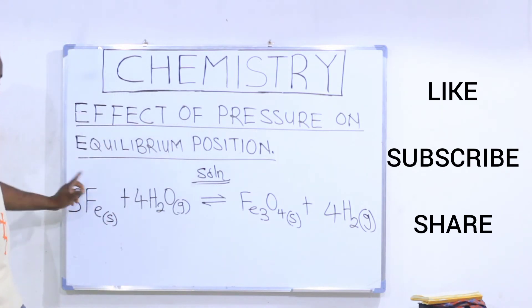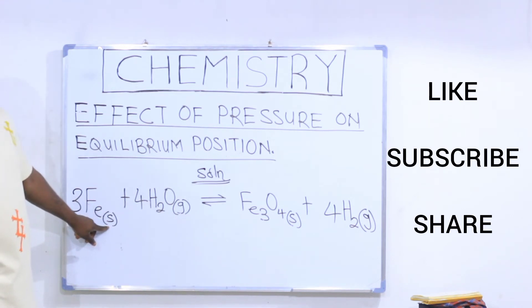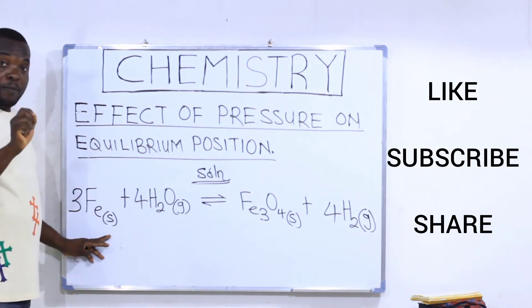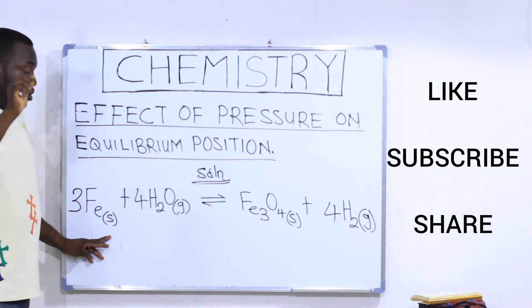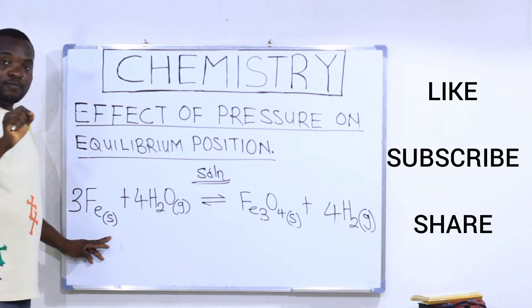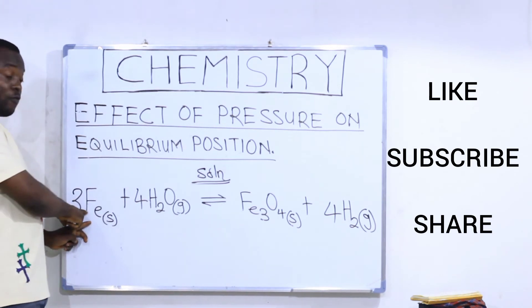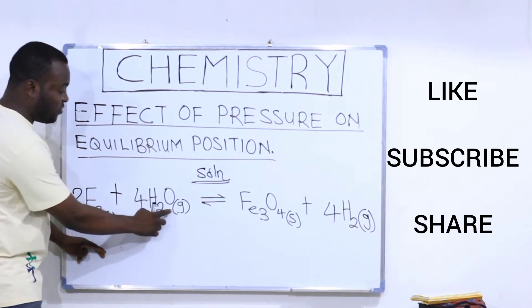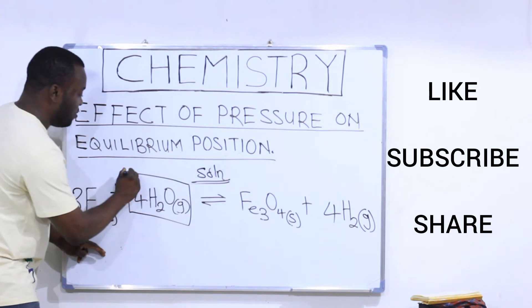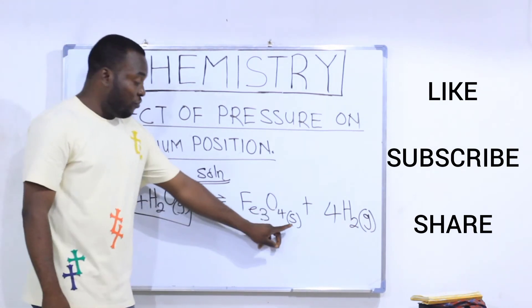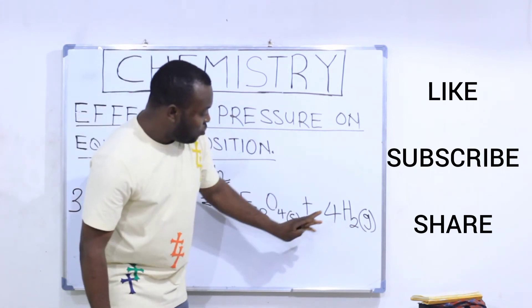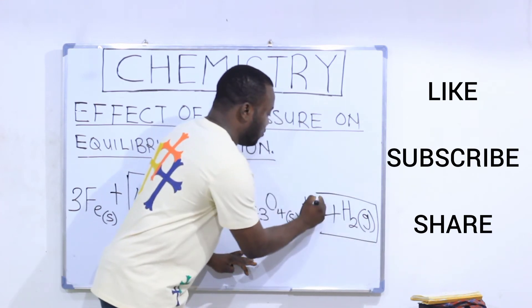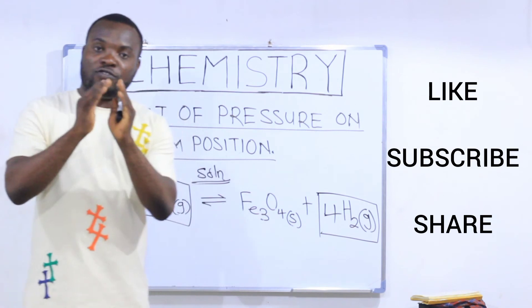Looking at this equation, you can see that the iron is in the solid state, which means we are not going to consider iron because it is in the solid state — we are dealing with pressure. When dealing with pressure, focus only on substances that are in the gaseous state. We are not going to consider iron because it is solid. We are going to consider the water and the hydrogen because they are in the gaseous state.